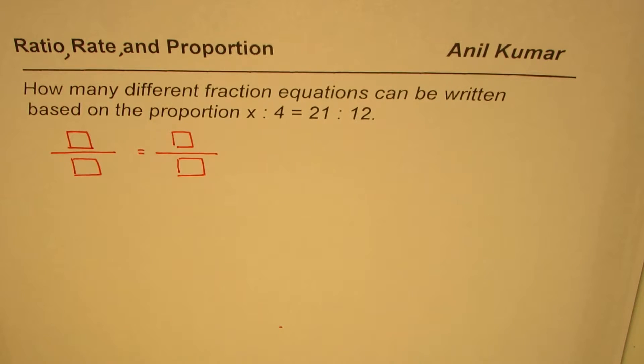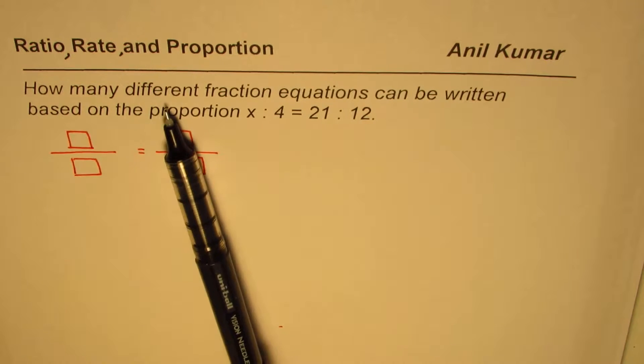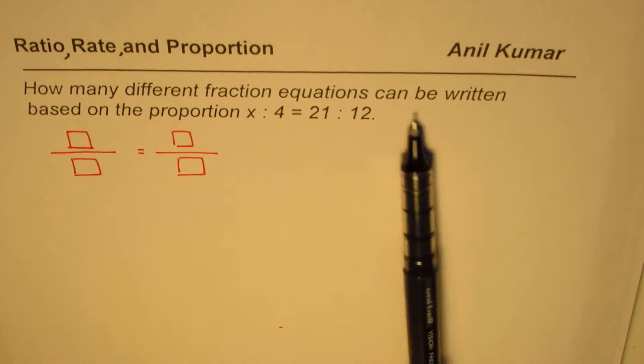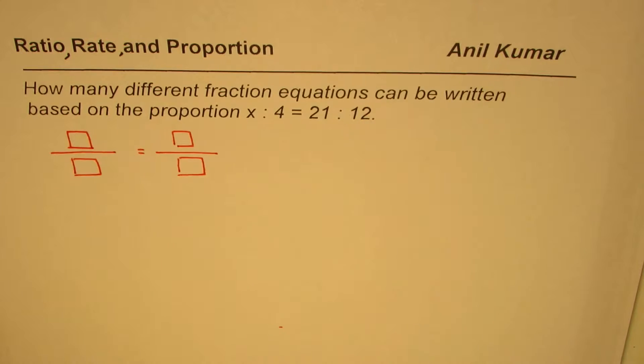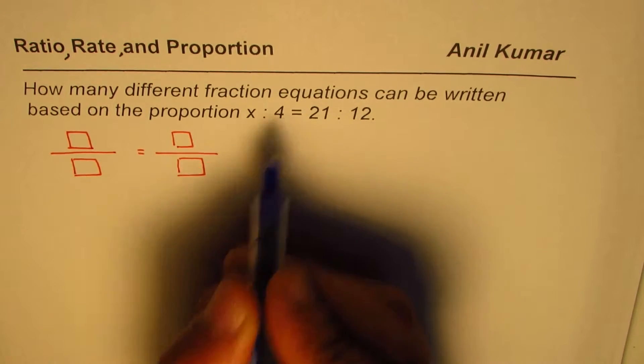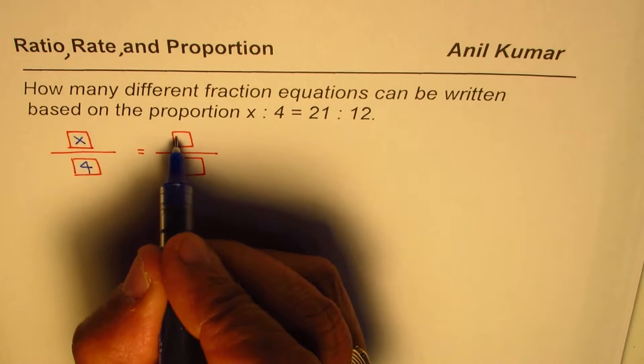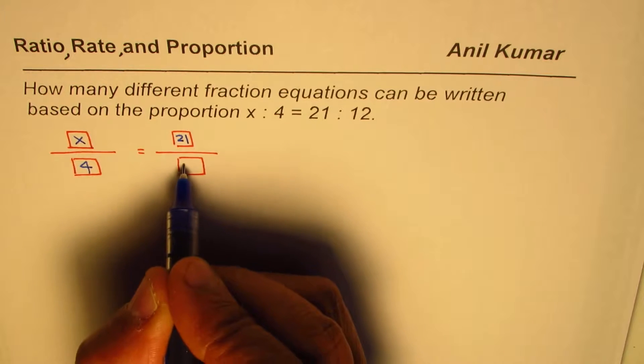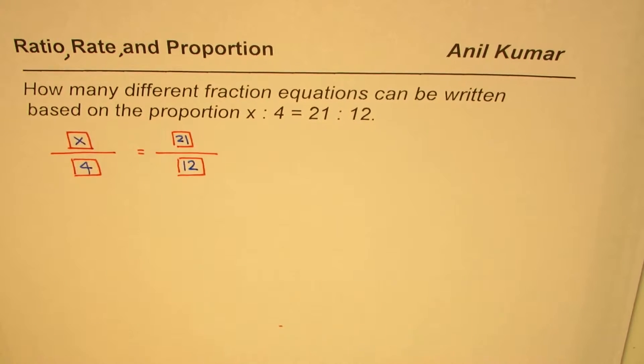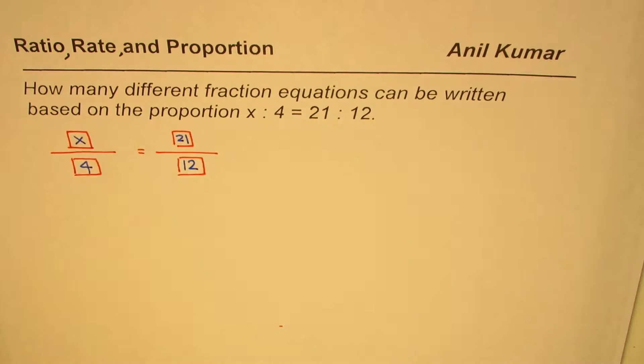So let's read the question once again. How many different fraction equations can be written based on this kind of proportion? So let me write down one for you. x is to 4 could be written as x over 4, equals to 21 is to 12, 21 over 12. So that is one of the fraction equations.